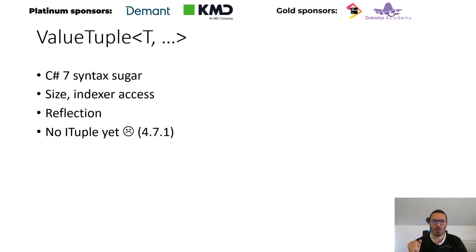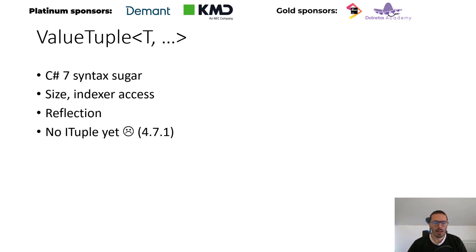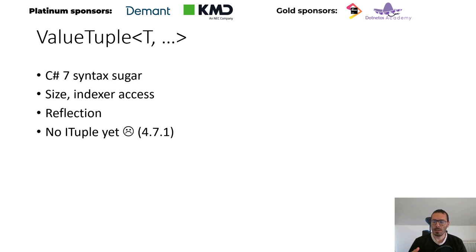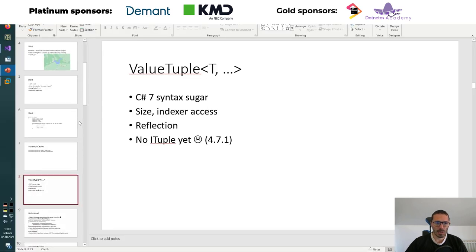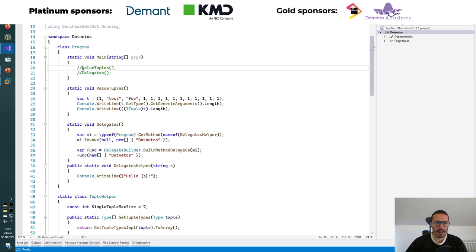Then I switched to ValueTuple, because with C# 7 we had this nice syntax sugar. In my opinion it looks and feels okay to have this kind of interface between SQL — where you have rows with columns — and the tuple. The problem is that for it to work, I basically need to know the size of the tuple, the types inside, and be able to access it dynamically using some kind of indexer. I don't know how big the tuple will be because you can create any tuple you want. So there was a lot of reflection code. Let me jump into code and show you what I mean.